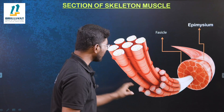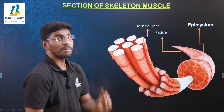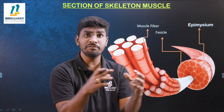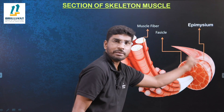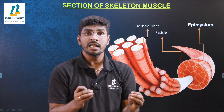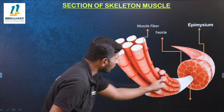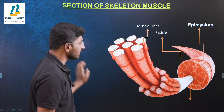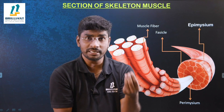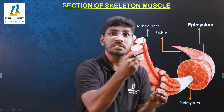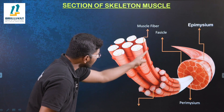Inside the fascicle there are also smaller bundles. One of those smaller units is called a muscle fiber. So many muscle fibers fuse to form a fascicle, and many fascicles fuse to form the complete muscle. The specific membrane that surrounds each fascicle is known as perimysium. So remember: the outermost covering membrane of the muscle is called epimysium, and the membranous sheath surrounding the fascicle is called perimysium.